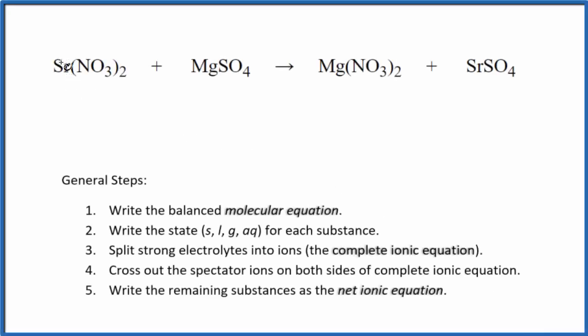In this video, we'll write the balanced net ionic equation for Sr(NO3)2 plus MgSO4. This is strontium nitrate plus magnesium sulfate. The first thing we need to do is balance the molecular equation. In this case, it's already balanced. Next, we need to write the states for each substance.